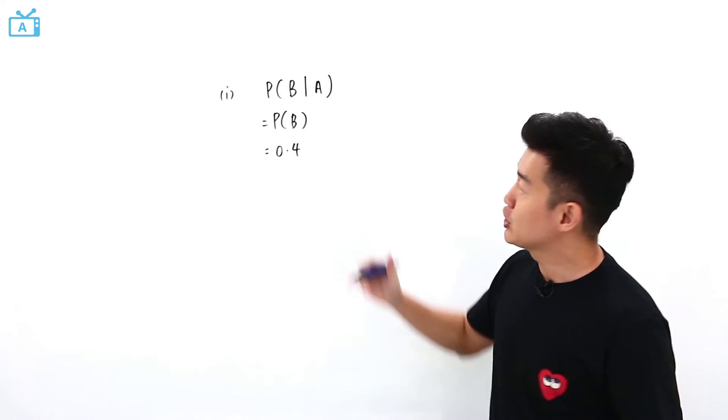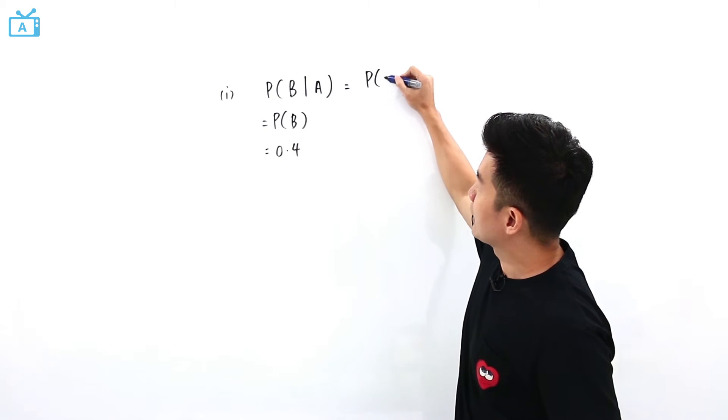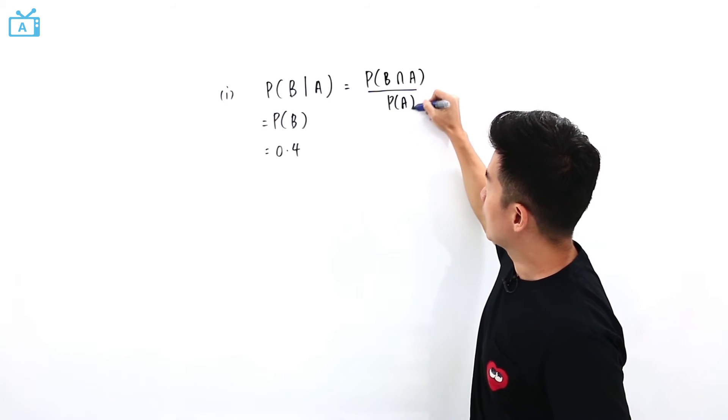Or we can also go back to the definition of conditional probability. The probability of B given A is defined as the probability of B intersect A divided by the probability of A.